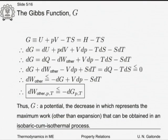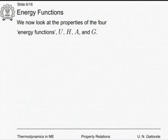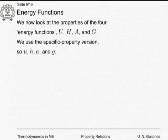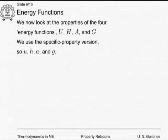Chemists and chemical engineers use the Gibbs function very heavily. Unless we go into combustion and kinetics, we do not really need to worry about it here. We will use these four functions as a handle to obtain very important property relations, for which we need properties of exact differentials. We will now look at the properties of these four functions in their specific property version — dividing everything by system mass.